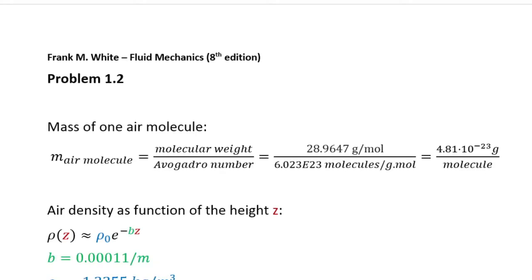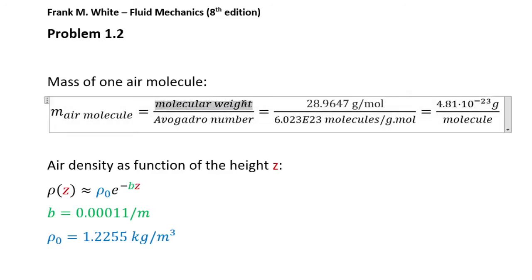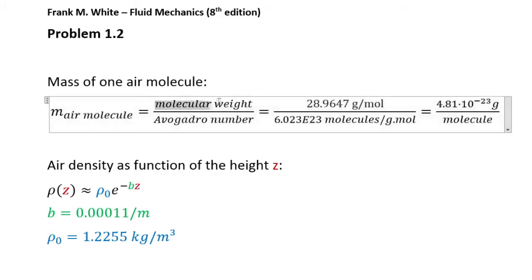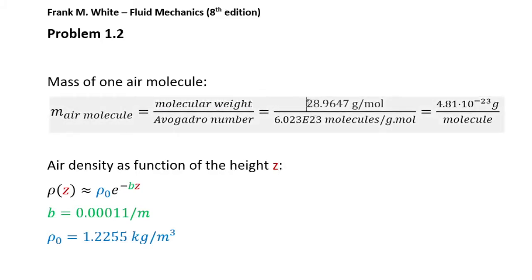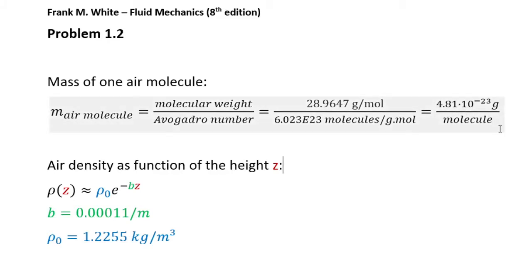First things first. We need to know, as a preliminary, the mass of one air molecule, which we'll be evaluating by dividing the molecular weight of the air by Avogadro's number. In this case, our molecular weight of the air is 28.964 grams per mole. We divide this by Avogadro's number to get the mass of one air molecule. We'll be using this in the final step of the problem to actually estimate the number of molecules in the entirety of Earth's atmosphere.